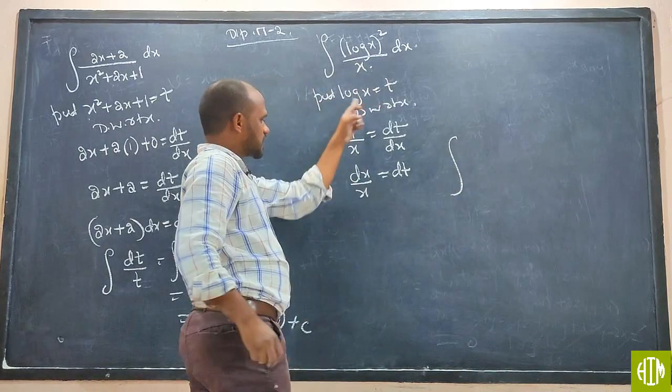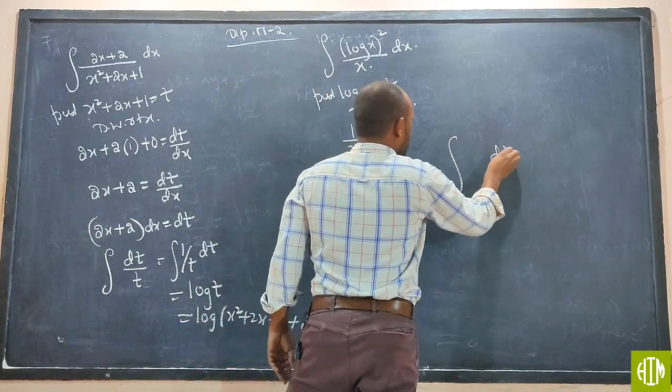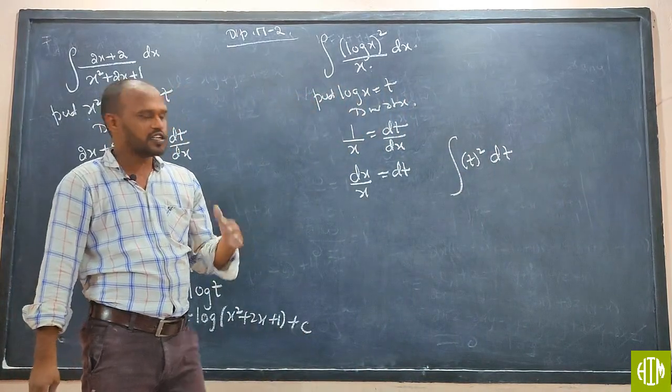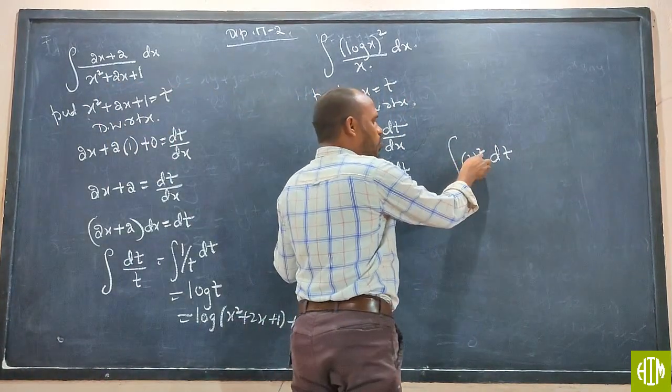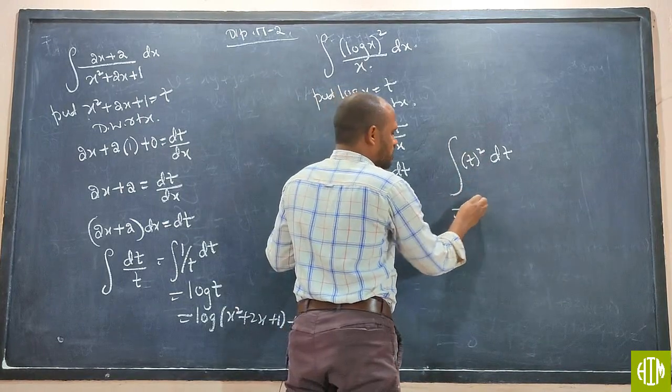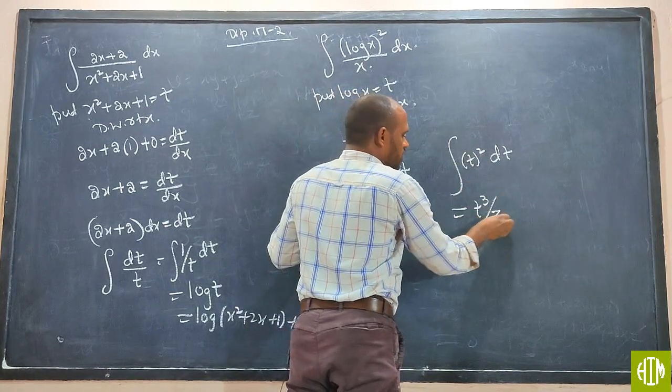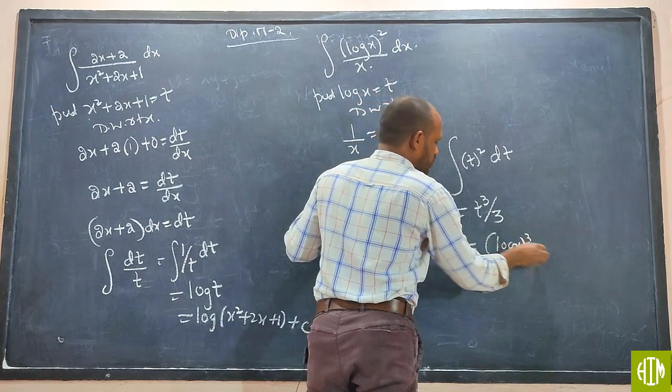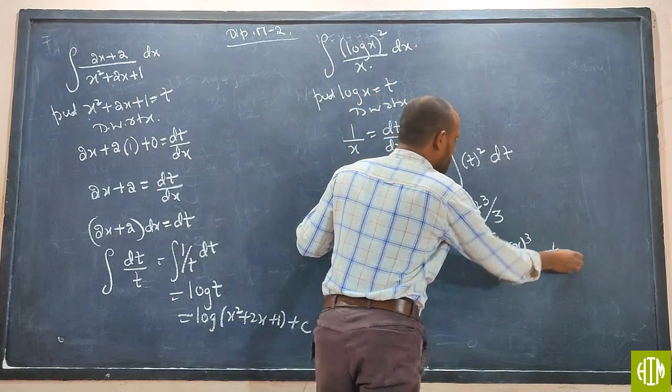Now we have dx by x is nothing but dt. That is nothing but t squared. T squared, x squared under x is x cube by 3. T squared under t is t cube by 3. But what is t? Log x. Log x cube by 3 plus c.